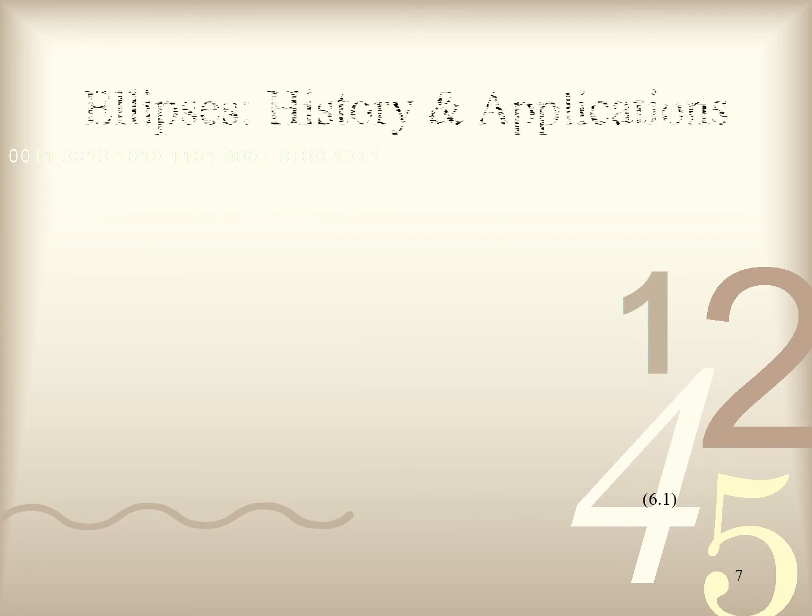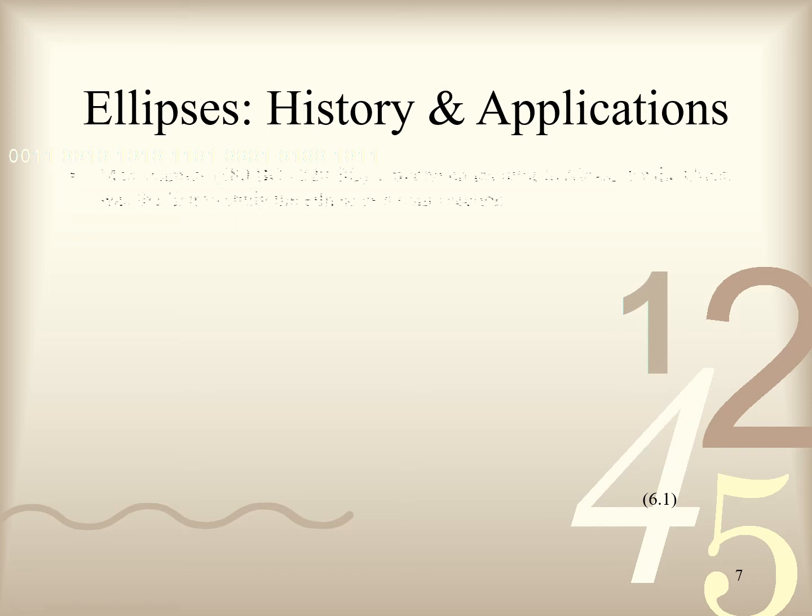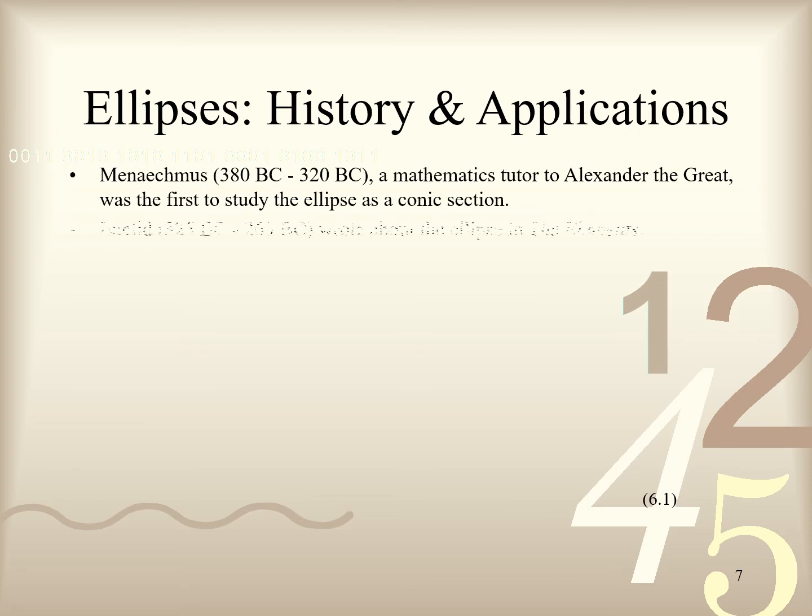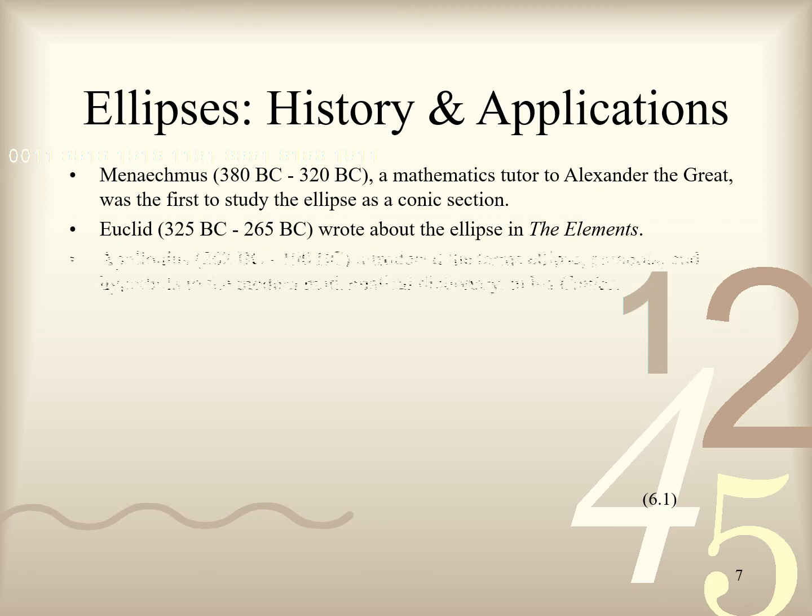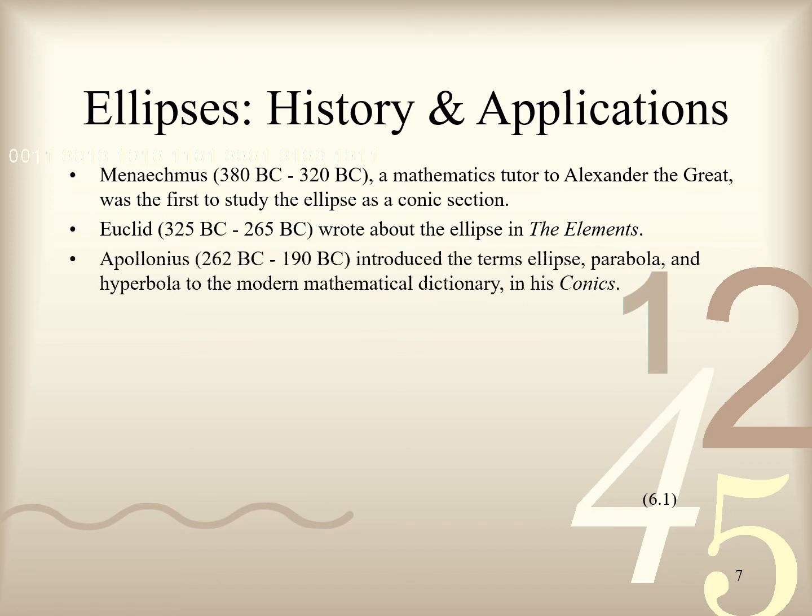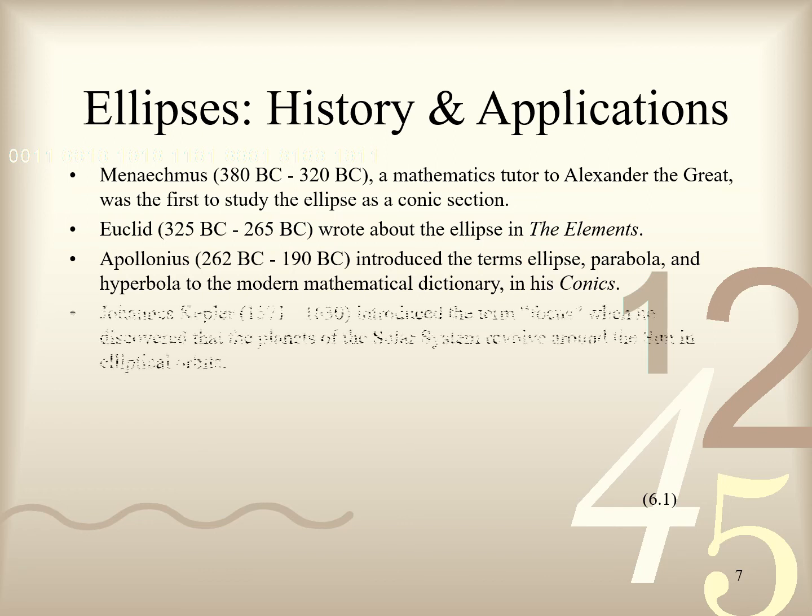Now we briefly describe some of the history and applications of ellipses. Around the 4th century BC, the Greek mathematician Menachemus was the first to study the ellipse as a conic section, including the parabola and hyperbola. The Greek mathematician Euclid of Alexandria, considered the father of geometry, wrote about the ellipse in his famous work The Elements. This would have a profound impact on the mathematical knowledge of Western civilization for at least two millennia. By the 3rd century BC, the Greek mathematician Apollonius had introduced the terms ellipse, parabola and hyperbola to the modern mathematical dictionary in his work Conics.